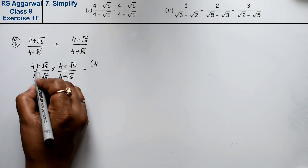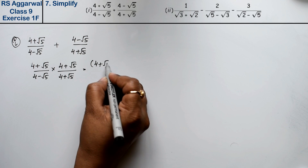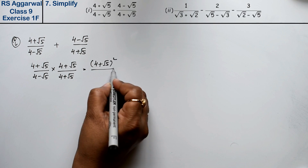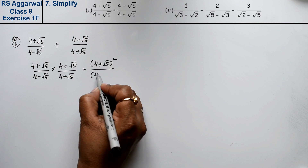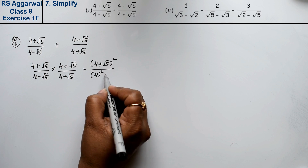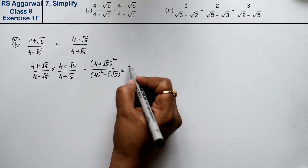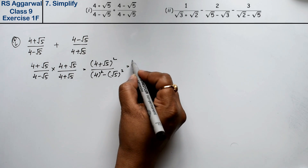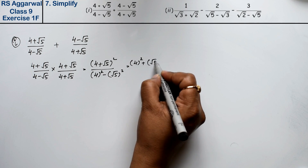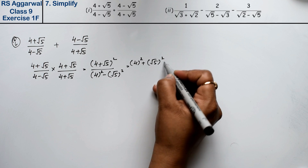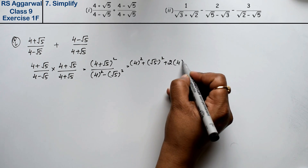So the numerator becomes (4 + √5) whole squared. The denominator uses the identity (a + b)(a - b), giving 4 squared minus (√5) squared. The numerator expands using the formula a² + b² + 2ab.